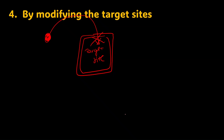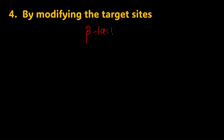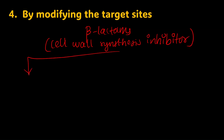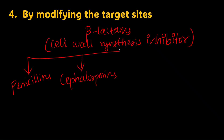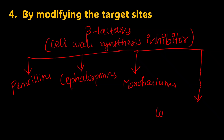Before the examples, recall that beta-lactam antibiotics are cell wall synthesis inhibitors. This class includes penicillins, cephalosporins, monobactams, and carbapenems. These are all beta-lactam antibiotics.